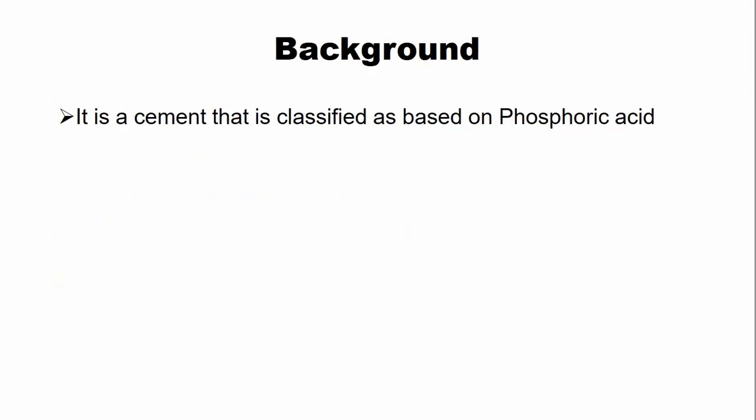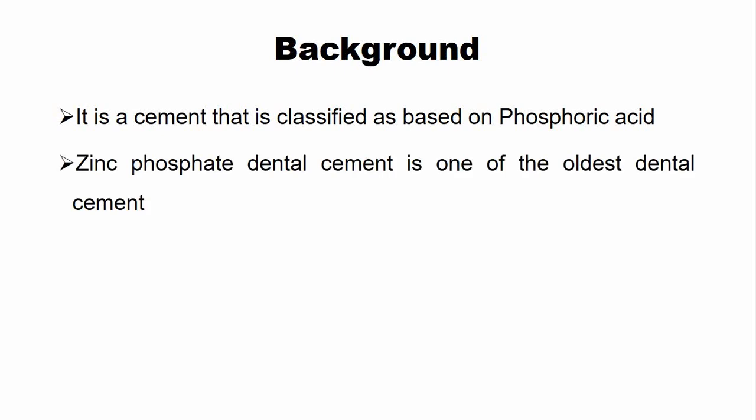The zinc phosphate dental cement is classified as a cement based on phosphoric acid. Other cements based on phosphoric acid include silicate cement and copper phosphate cement. The zinc phosphate cement is one of the oldest dental cements and has been in use since 1900.